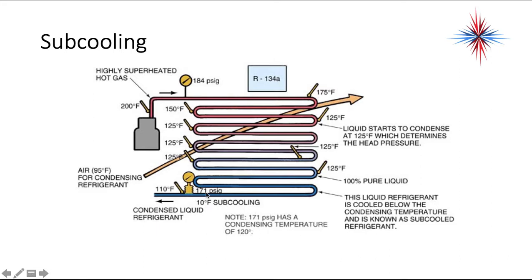There is some pressure drop — now at 171 PSI — which is not unusual in a long condenser coil. This liquid refrigerant is now cooled below the condensing temperature. The condensing temperature is around 125 degrees, and we are now at 110 degrees, giving us 15 degrees of subcooling. With an ambient air temperature of 95 degrees, the condensing temperature of 125 degrees is 30 degrees above ambient — which is normal.